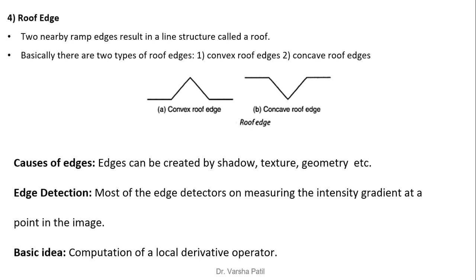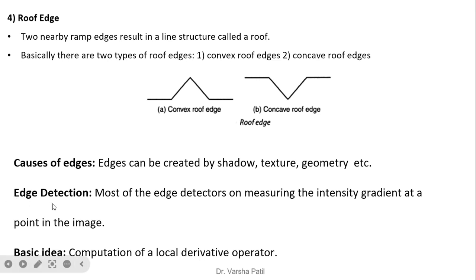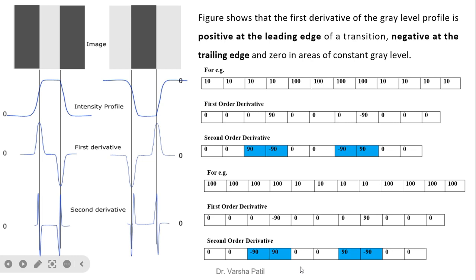Edge detection works by measuring the intensity gradient at a point in an image. For edge detection, we use a mask based on the gradient or derivative operation. The basic idea is the computation of a local derivative operator — we take the difference between values in close proximity.